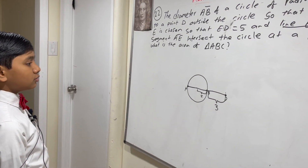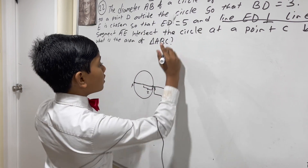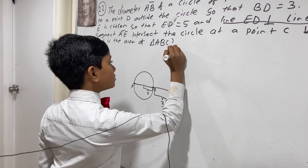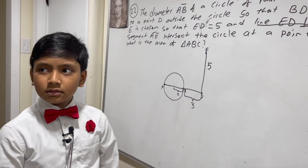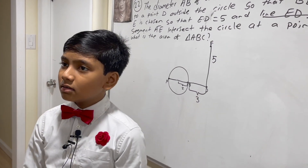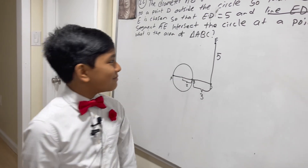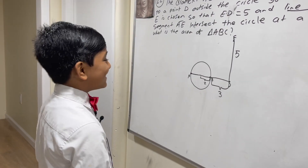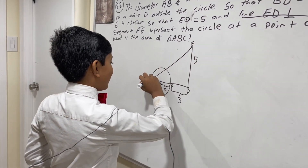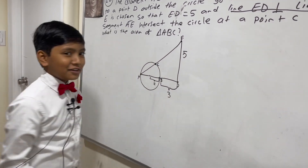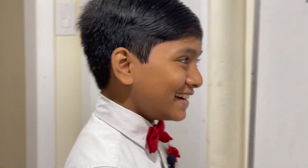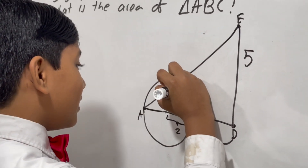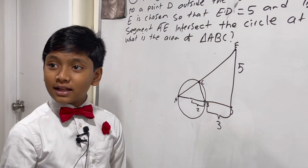Point E is chosen so that ED is 5. [Students argue back and forth: '5!' '6!' repeatedly.] My mom told me it's 5! Are you two mentally... Nevermind! Go to the kindergarten classroom, it's right down the hall!